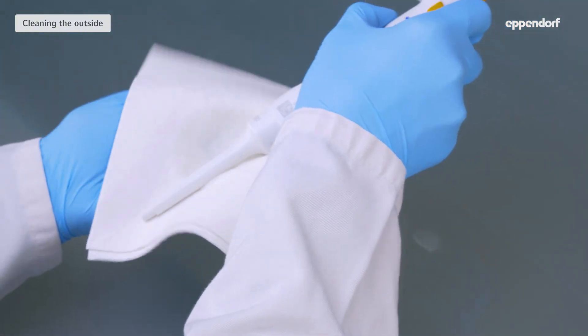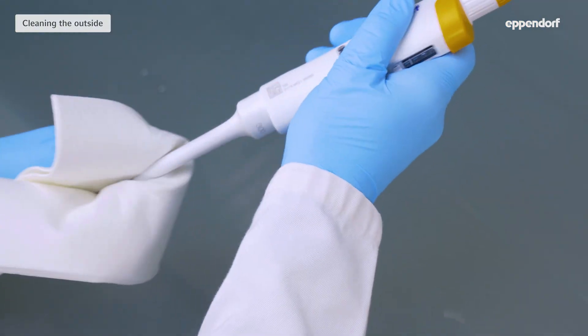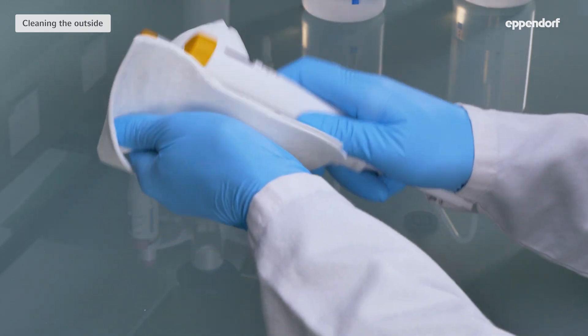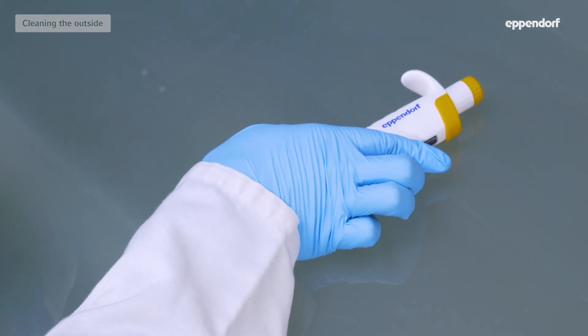If the inner parts of the pipette are contaminated by liquid accidentally drawn into the tip cone or aerosols, you'll need to rinse the lower part with the cleaning agent and distilled water.